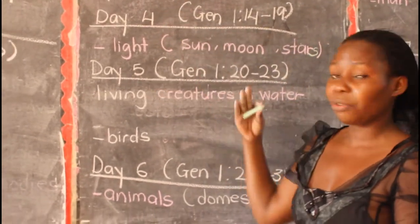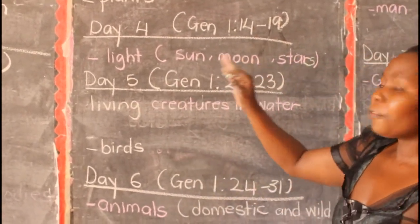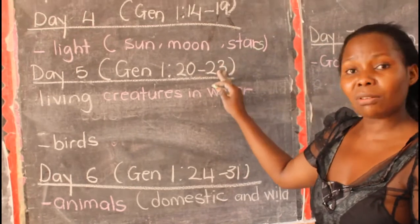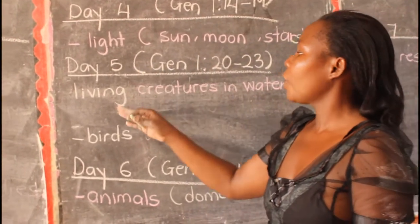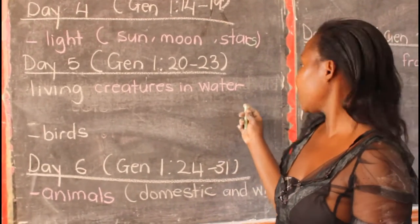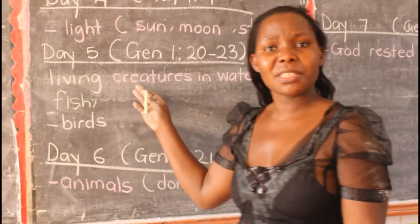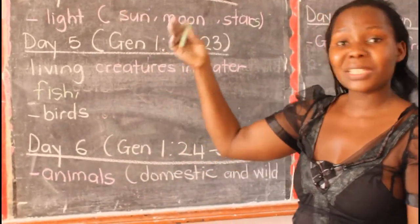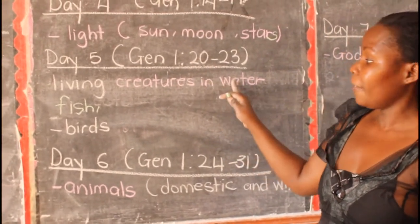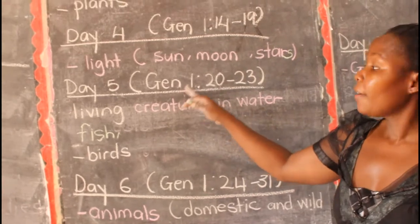On the fifth day, still in Genesis chapter 1, go to verse 20 to verse 23. On the fifth day, God created the living creatures in water. Which things are those? I mean the fish. Which other living things in water? You know the whales, the sharks? They were all created on the fifth day — the living creatures in water.